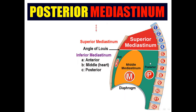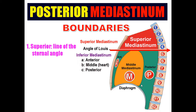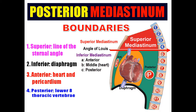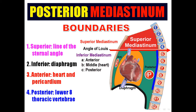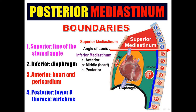The posterior mediastinum is behind the heart. Its boundaries: superiorly — the line of the sternal angle; inferiorly — the diaphragm; anteriorly — the heart and pericardium; posteriorly — the lower eight thoracic vertebrae.